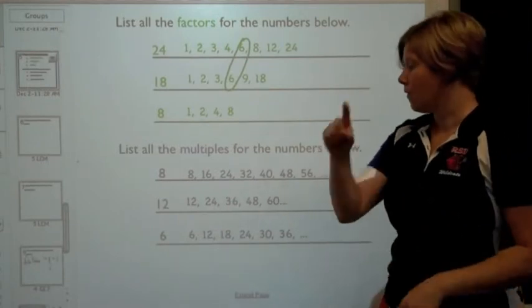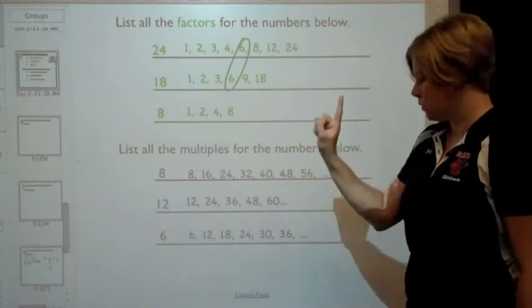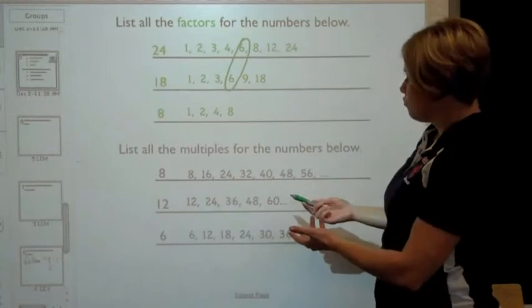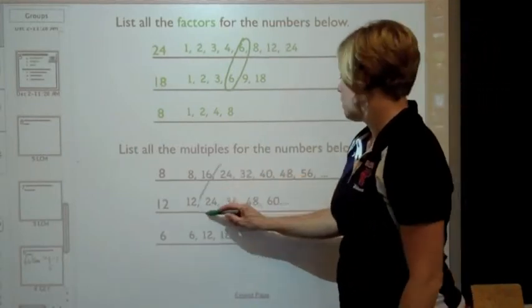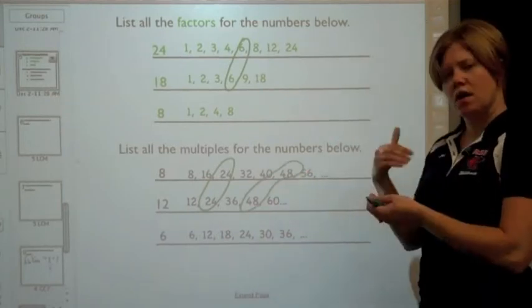So first, I'm going to check the LCM for 8 and 12. And what you do is you look through the multiples for a common multiple. Let's see, both have 24, both have 48, and there will be more.